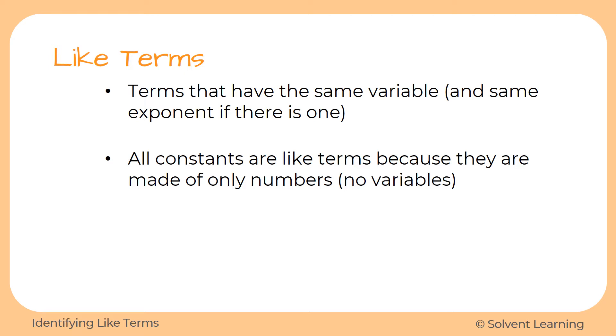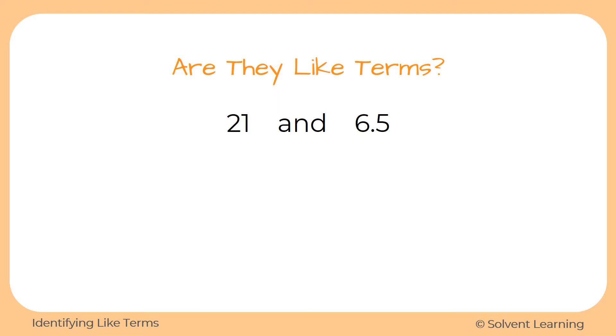Now let's look at sets of examples to be able to figure out whether two terms are like or if they are not like. Okay, here's our first example. Are these like terms? We have 21 and 6.5. They're both just numbers, they're constants, so in this case, yes, they are like terms because they are both constant terms.